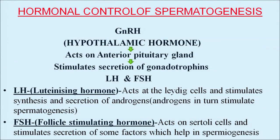Hormonal control of spermatogenesis starts with GnRH — gonadotropin releasing hormone — which is a hypothalamic hormone secreted by the hypothalamus. It acts on the pituitary gland, which stimulates secretion of two gonadotropins: LH (luteinizing hormone) and FSH (follicle stimulating hormone). LH acts on Leydig cells and stimulates secretion of androgens, which in turn stimulate spermatogenesis. FSH acts on Sertoli cells and stimulates secretion of factors which help in spermiogenesis.